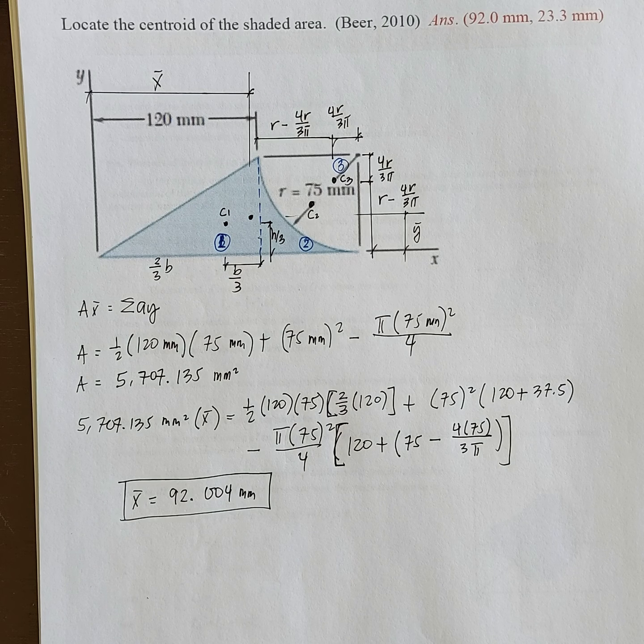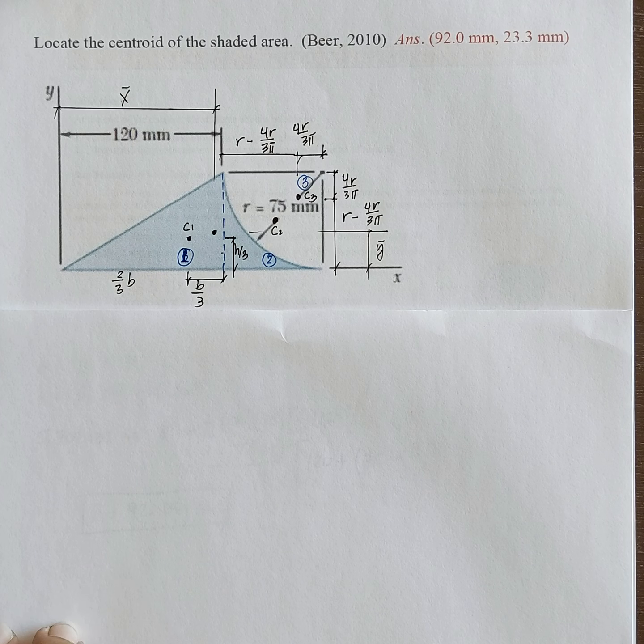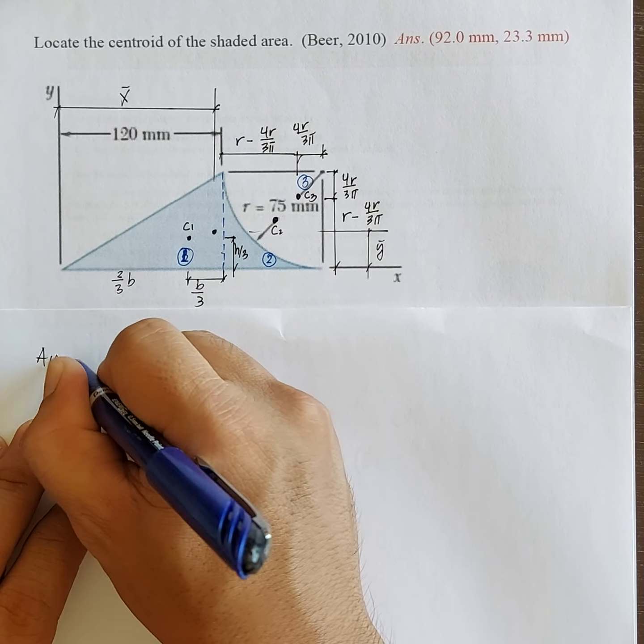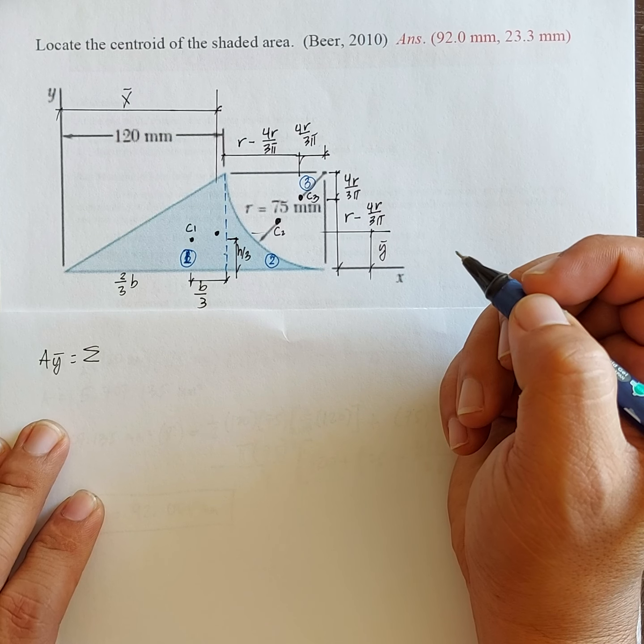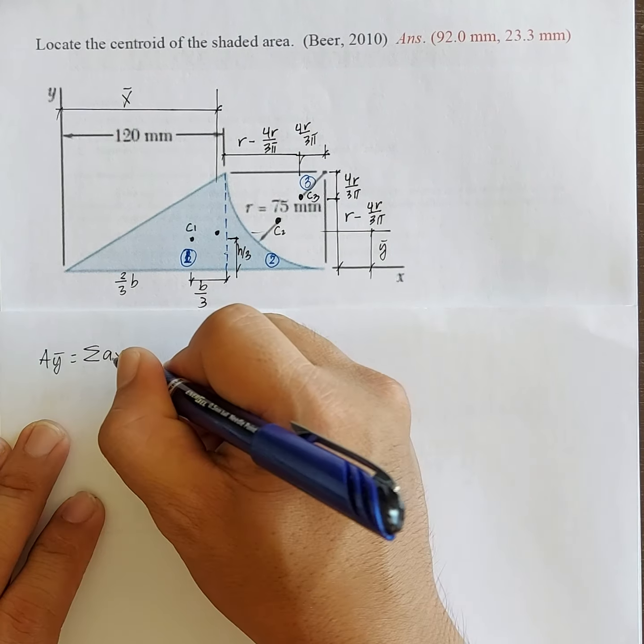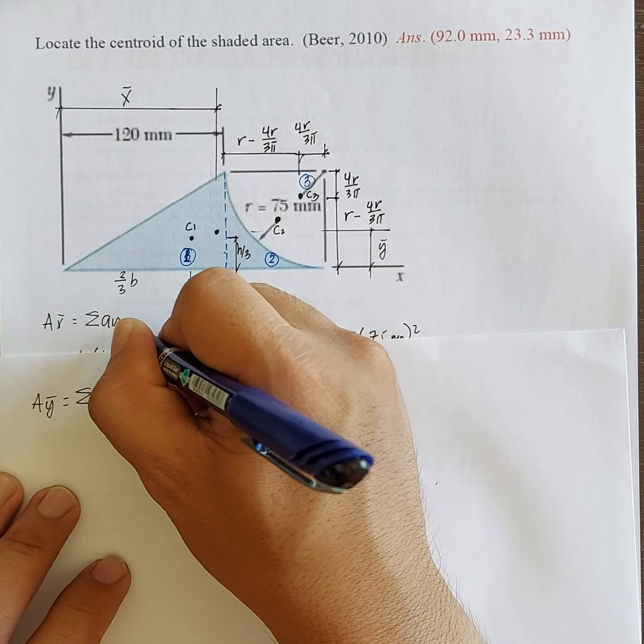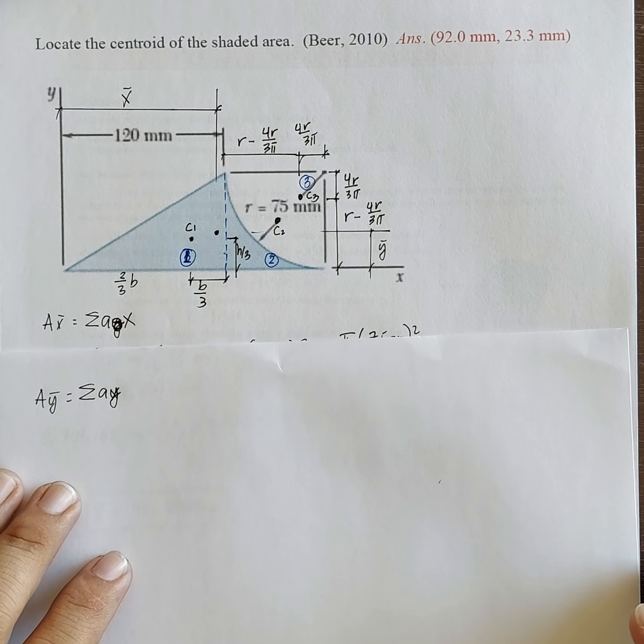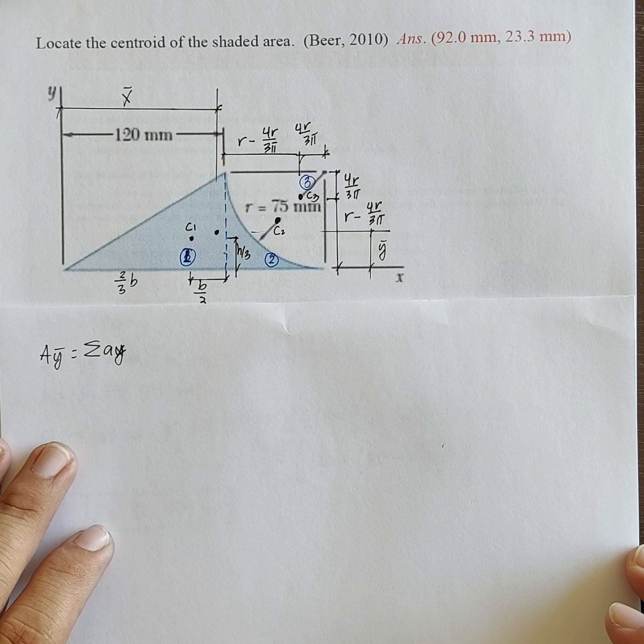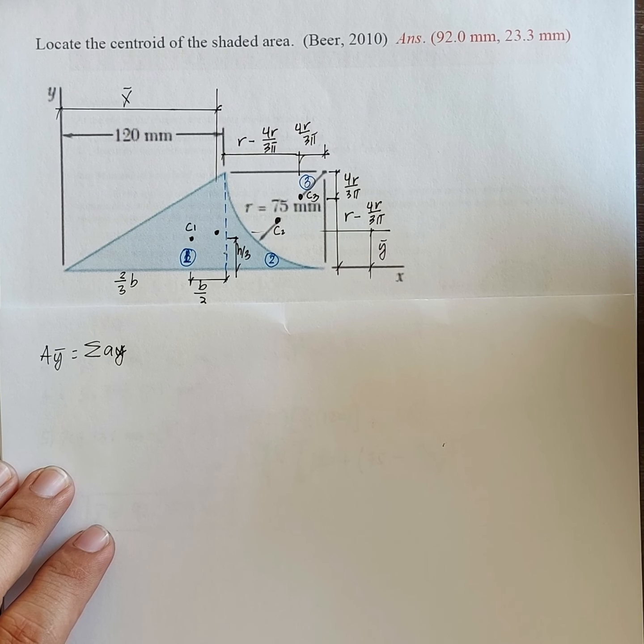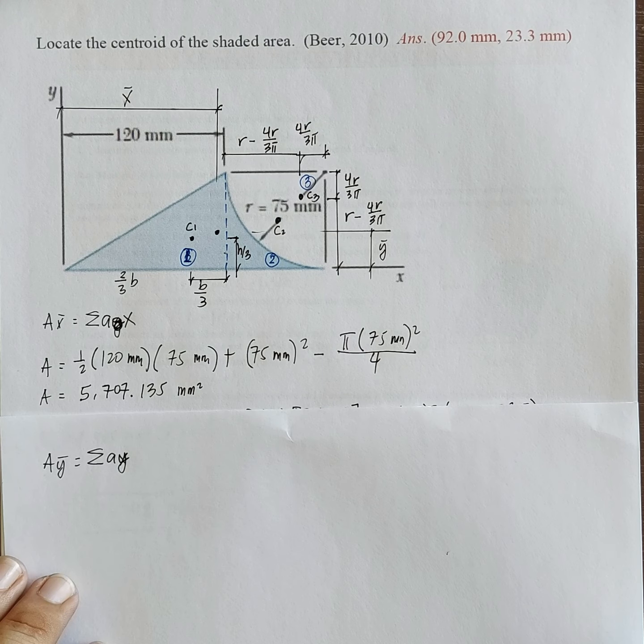Next, y-bar. Y-bar. So same principle, of course. So total area times y-bar is equal to summation of the moments of each area about the x-axis. A times y. So total area, we have solved this one a while ago. So that is 5,707.135 times y-bar equals summation.